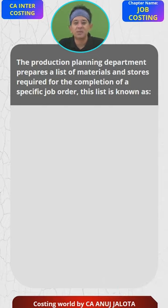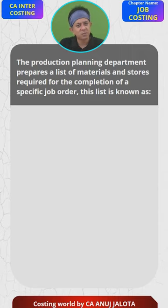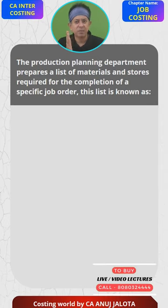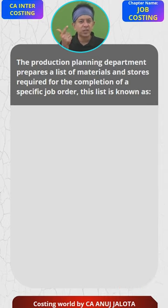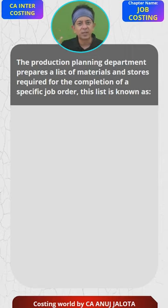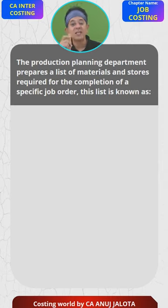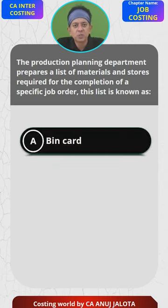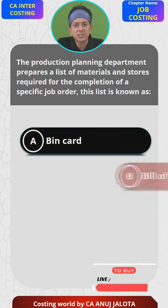Whenever he gets an order like this, he will prepare some kind of a statement whereby he will list: for this almira I will require this much wood, these many nails, this much amount of Fevicol, this much amount of Sunmica, these many handles, and so on. That list is called as what?